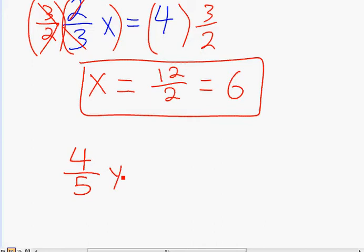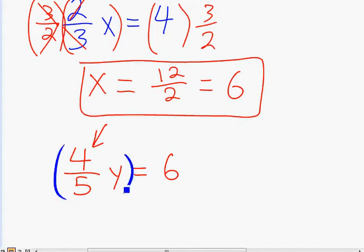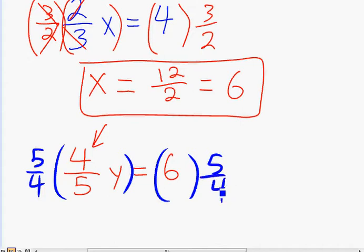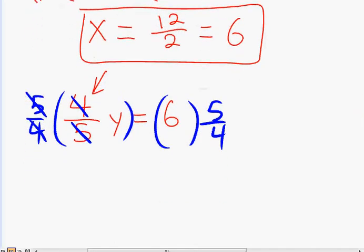4 over 5y equals 6. Again, you'll look at this fraction, 4 over 5, and see what the reciprocal is. And then we'll multiply it. Take a wild guess. That's right, we're going to multiply by 5 over 4. Again, the 5 and 5 will cancel, 4 and 4 will cancel. And this happens all the time. When you multiply by the reciprocal, you always get 1.